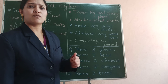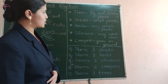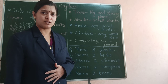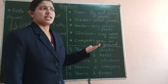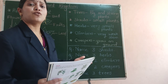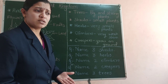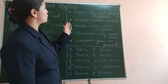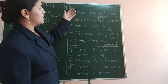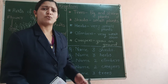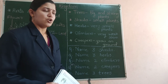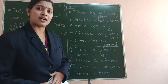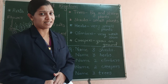Various types of trees are found around us. We also have small plants around us. There are plants that give us flowers and plants that give us vegetables. Today we will be learning these types of plants or trees in detail.